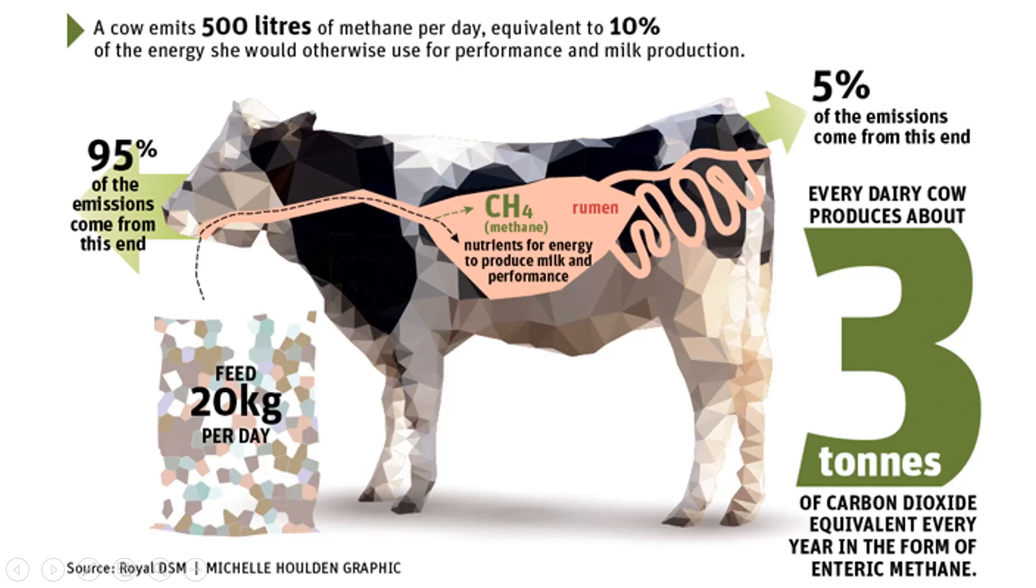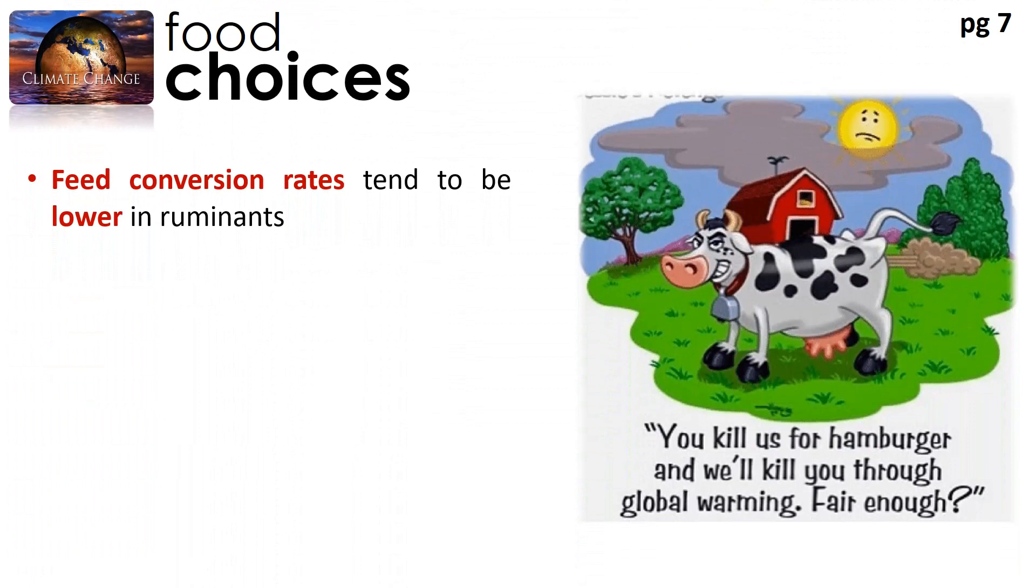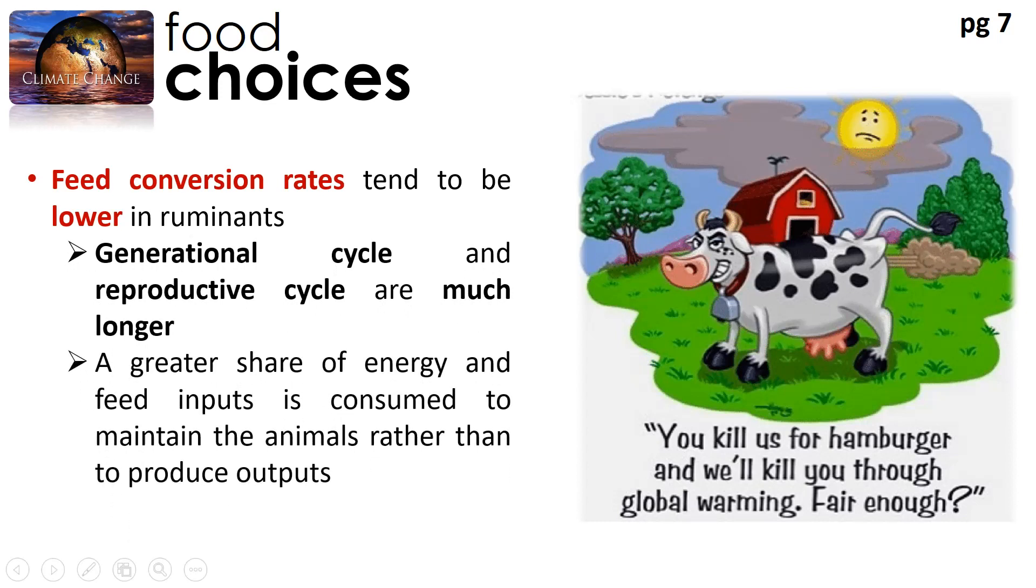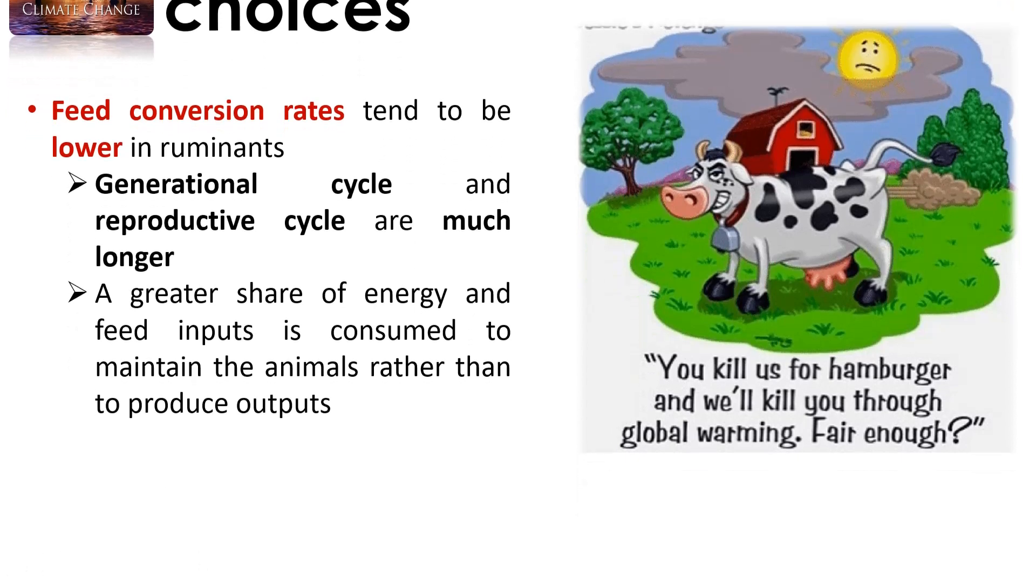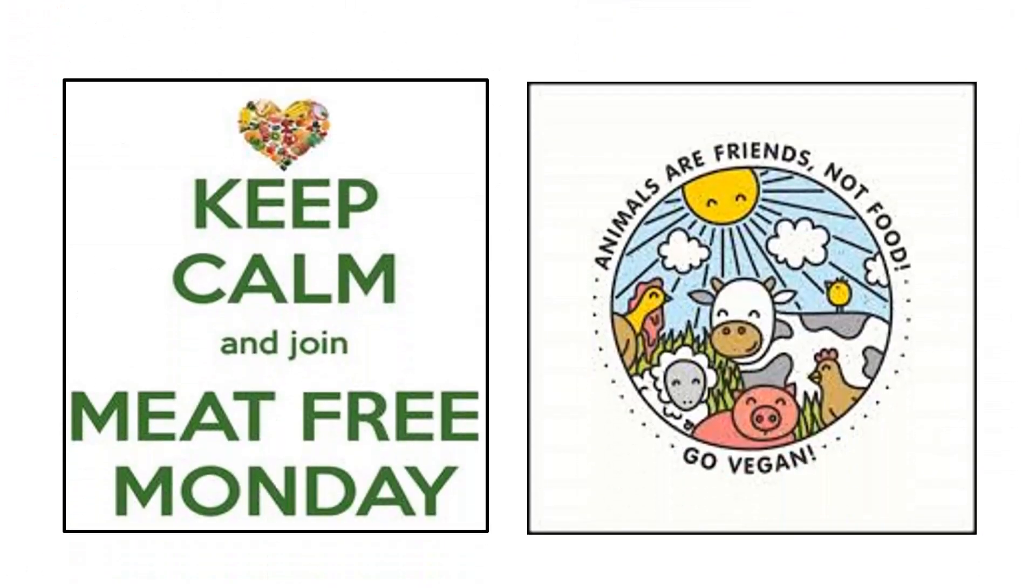To make things worse, a cow will need about 20 kg of food - 20 kg of feed needs to be given to the cow per day. So in the end, the feed conversion rates for these ruminant animals also tend to be lower, and their generational cycle and reproductive cycle is much longer. So in the end, a greater share of energy of those feed inputs is actually consumed to maintain the animal rather than getting the outputs. So in short, how we can help to reduce this effect is to maybe go meat-free on certain days. And if you can, maybe we should try going vegan. Shout out to some of my vegan students. So this is where I will end off my first lecture and I'll talk to you again in the next lecture.